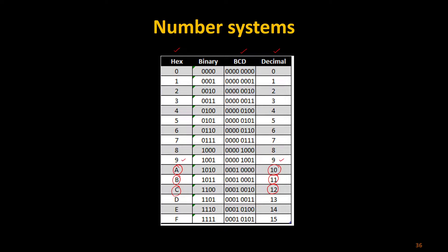Since it is binary coded decimal, instead of giving zeros and ones we are directly giving decimal values. From those decimal values I can make the conversions and convert them to hexadecimal values.